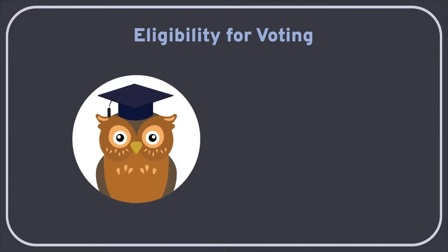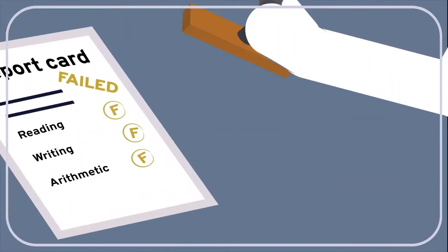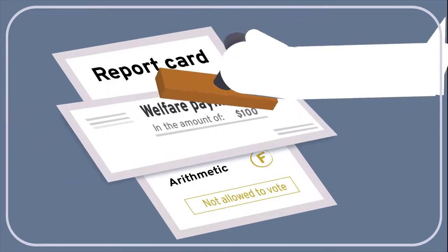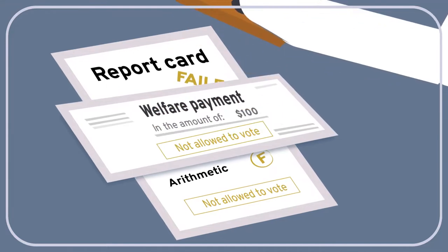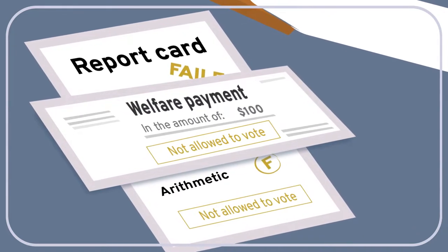Second, he thought that voting should be restricted on the basis of education and income. No one who could not read, write, and perform the common operations of arithmetic would be allowed to vote. Neither would anyone receiving public assistance, since he who cannot by his labor suffice for his own support has no claim to the privilege of helping himself to the money of others.